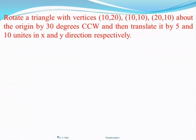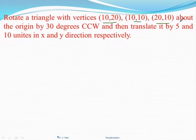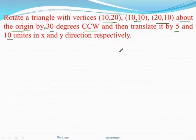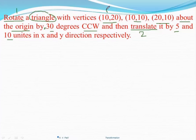Consider the numerical: rotate a triangle with vertices (10,20), (20,10) and (10,10). We have to rotate this triangle about the origin in a counterclockwise direction. When rotating counterclockwise, the sign of the angle is positive. Then we have to translate it by 5 and 10 units in the x and y direction. So there are two types of transformation: first is rotation and second is translation, applied to the triangle having vertices P1, P2, and P3.